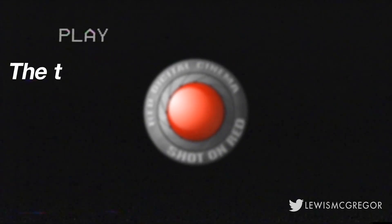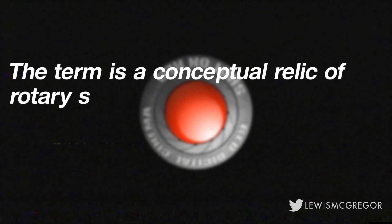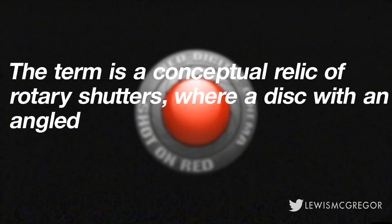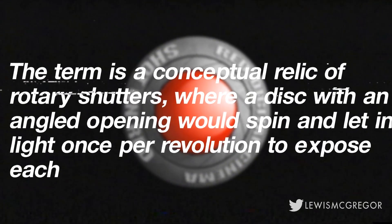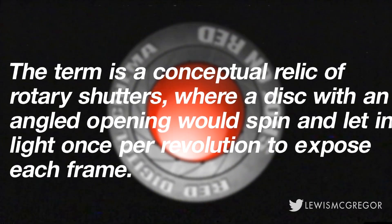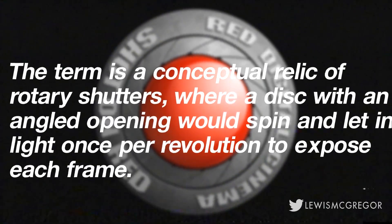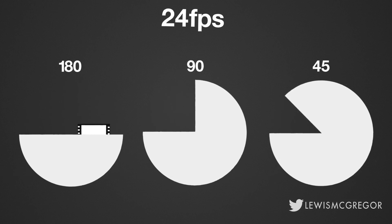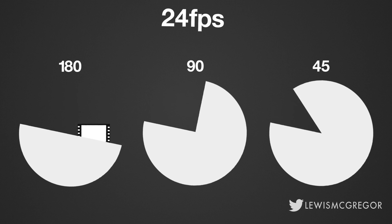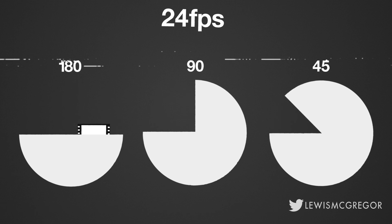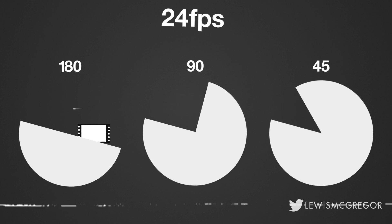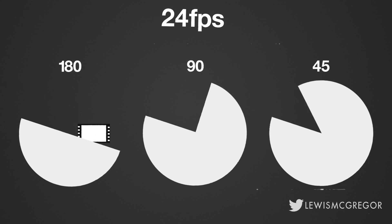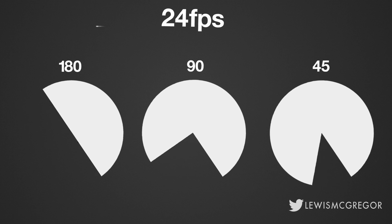Camera company Red says the term is a conceptual relic of rotary shutters, where a disc with an angled opening would spin and let in light once per revolution to expose each frame. In layman's terms, every time the frame advances, the shutter rotates and exposes that frame. Here we have a 180-degree shutter, a 90-degree shutter, and a 45-degree shutter based on the rotary shutter design. On an actual film camera, there would be an advancement of frame for each rotation — but for simplicity, we're just going to show one frame.